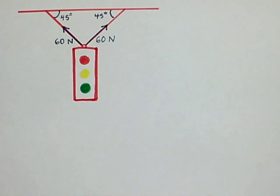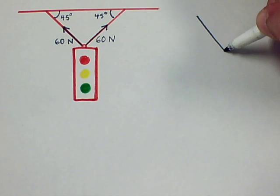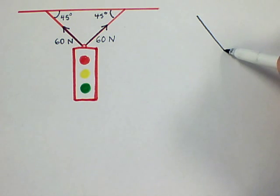Alright, so we're solving problem 55 of chapter 4. Here is the picture given for this problem in the book, and here's what a free body diagram will look like for this problem.